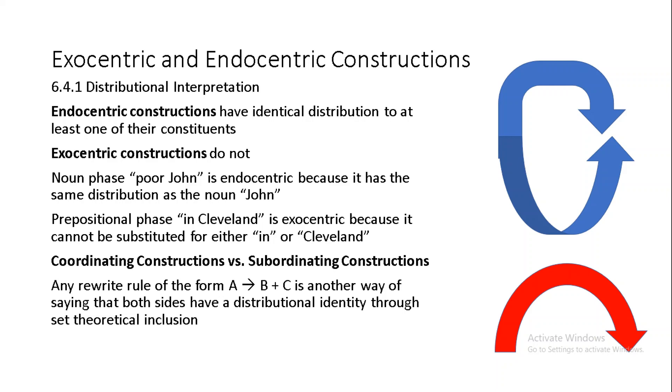These rules are necessary to grasp how rewrite rules are possible in the first place, since any rule of the form rewrite A as B plus C is just another way of saying that both sides of the arrow here share a distributional identity, and more precisely that of set theoretical inclusion. Under this view, the set verb phrases is so expansive as to include both subsets transitive and intransitive verbs, in that the distribution of the latter are formally included within the distribution of the former. Within a tree structure representation, the left-hand side of the rewrite rule disappears after the execution of the rewrite operation, except as the name of a higher node.